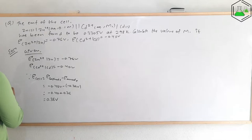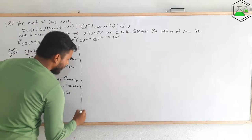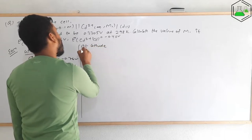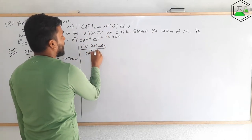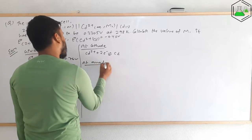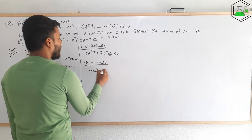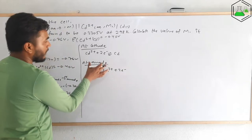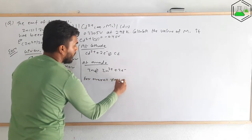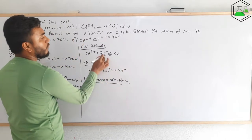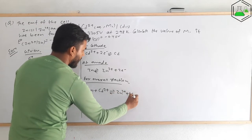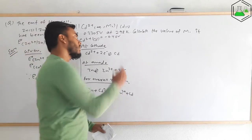Now we write the redox reactions. At the cathode, reduction occurs: Cd²⁺(aq) + 2e⁻ → Cd(s). At the anode, oxidation occurs: Zn(s) → Zn²⁺(aq) + 2e⁻. Adding the half-reactions, the electrons cancel, giving the overall reaction: Zn + Cd²⁺ → Zn²⁺ + Cd.